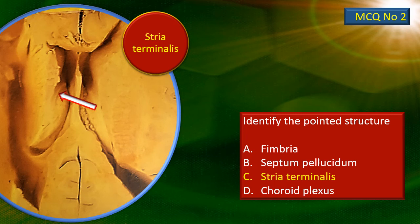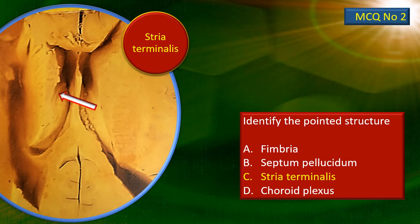MCQ number 2: the pointed structure is the stria terminalis. The area is the floor of the lateral ventricle. You can see lateral to the stria terminalis the body of the caudate nucleus, and medial to the stria terminalis the superior surface of the thalamus. Interestingly, in this specimen the thalamo-striate vein is not very clearly seen.